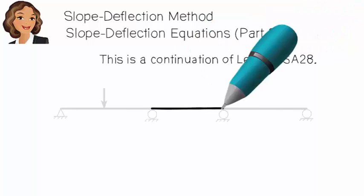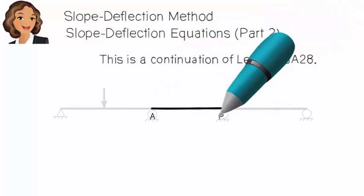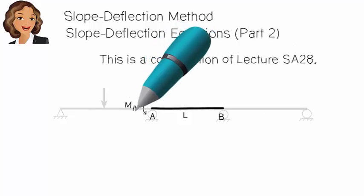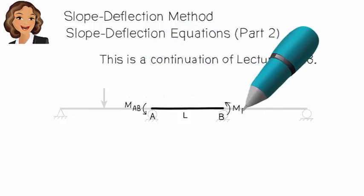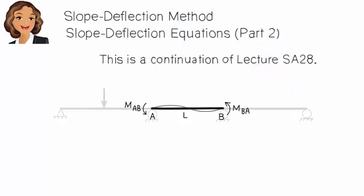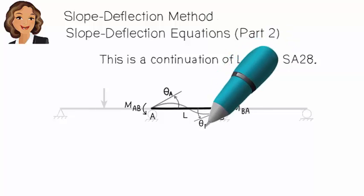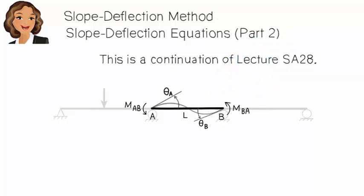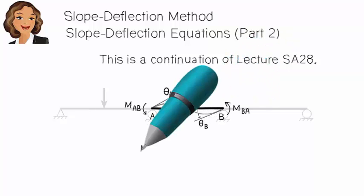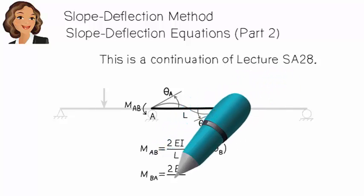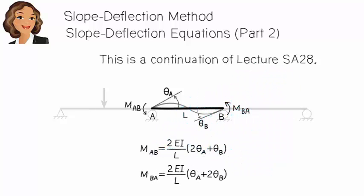In the previous lecture, we learned that given a beam segment, we can express its end moments in terms of the end rotations. We call these slope-deflection equations.